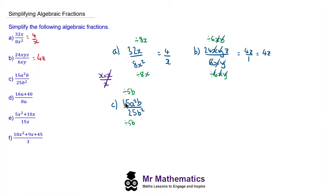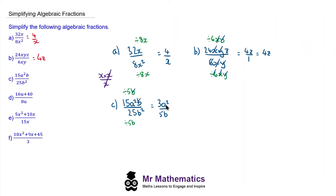Now 15 divided by 5 is 3. The a squared doesn't simplify when you divide it by 5b, so we have 3a squared, and the b divided by b makes 1. For the denominator, 25 divided by 5 is 5, and b squared divided by b makes just b. So this simplifies to make 3a squared over 5b.